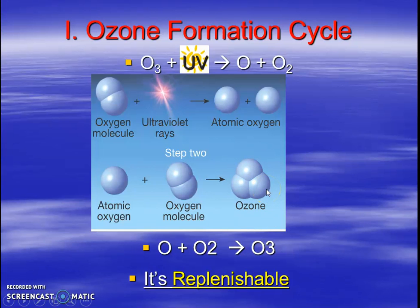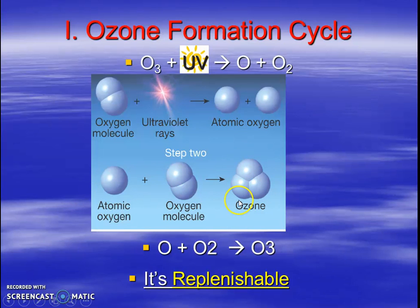So this can happen over and over again, because UV rays can hit the O3, and it can separate out again into these two, and then form again — hit by UV, separate out, form again. That's a normal process. And actually, that's how ozone shields the UV rays from hitting us. So we really appreciate that ozone does this process. It's very helpful.